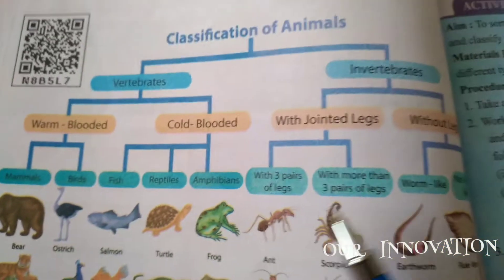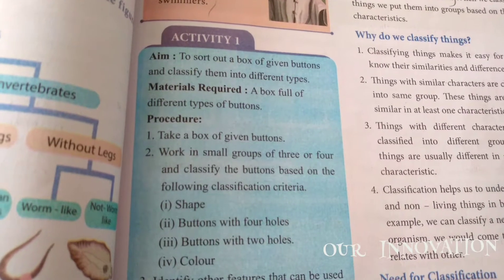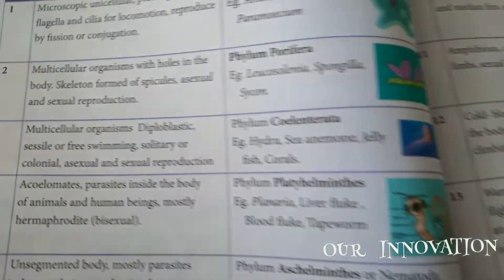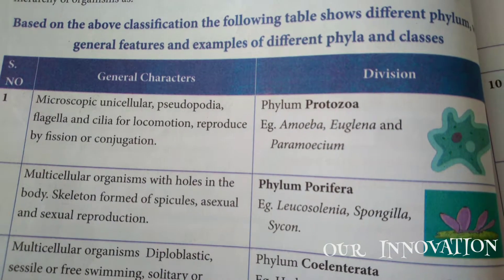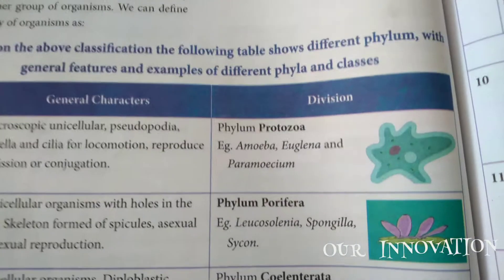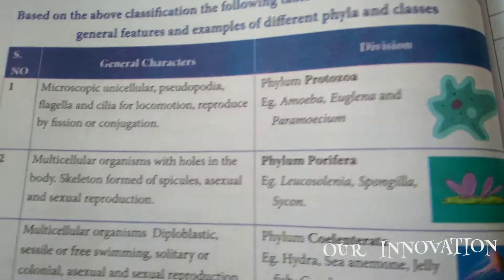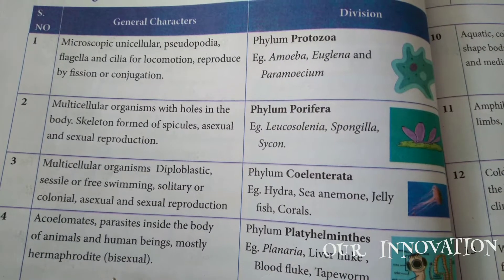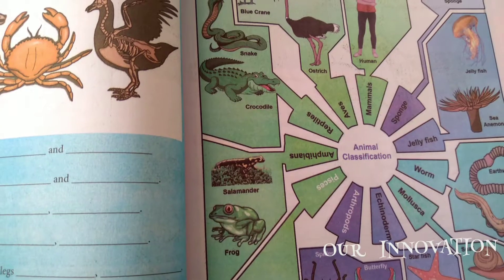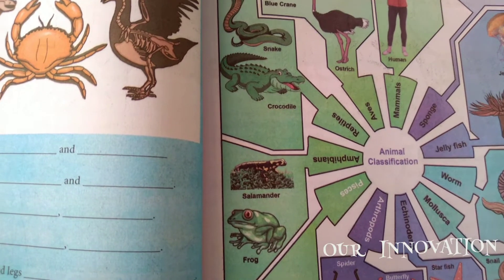These are the classifications of animals - vertebrates and invertebrates. Why do we need classification is also given here. They have given a table showing different phyla with general features and examples of different phyla and classes. These are the phyla they have classified. And then it moves on to the classification of plants.